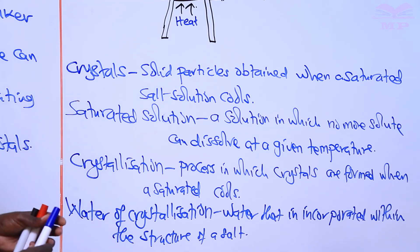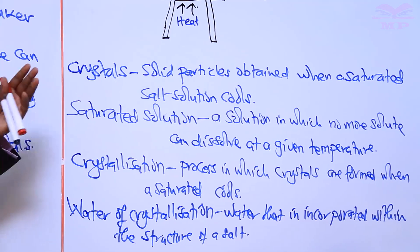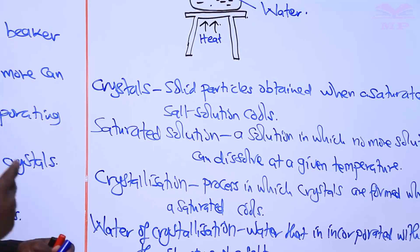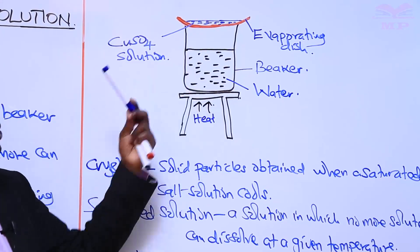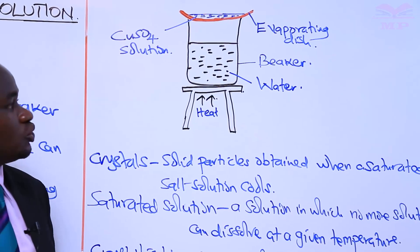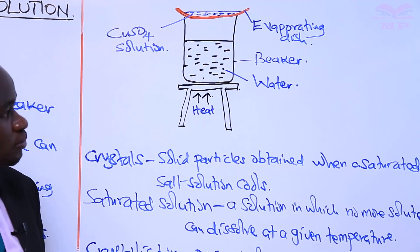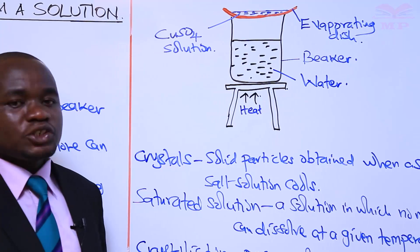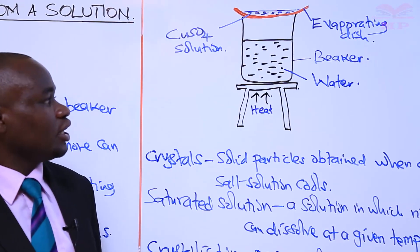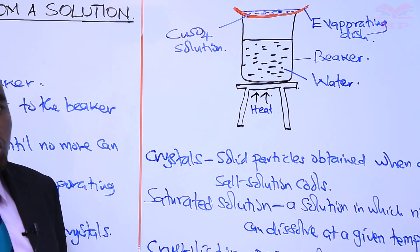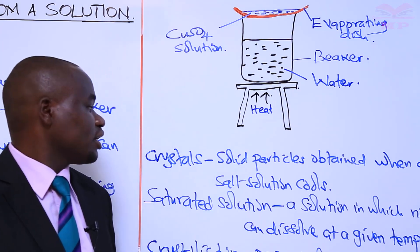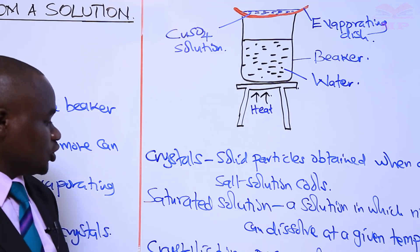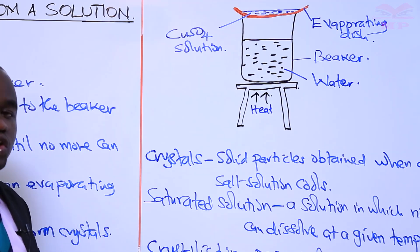We can obtain crystals from any salt solution by simply carrying out evaporation. As you heat, you dip a glass rod into the salt solution to find out when it's ready to form crystals. After that, you remove it from the source of heat and allow the salt solution to cool. On cooling, it forms solid particles called crystals. The process of formation of crystals is called crystallization. That is the end of our lesson.